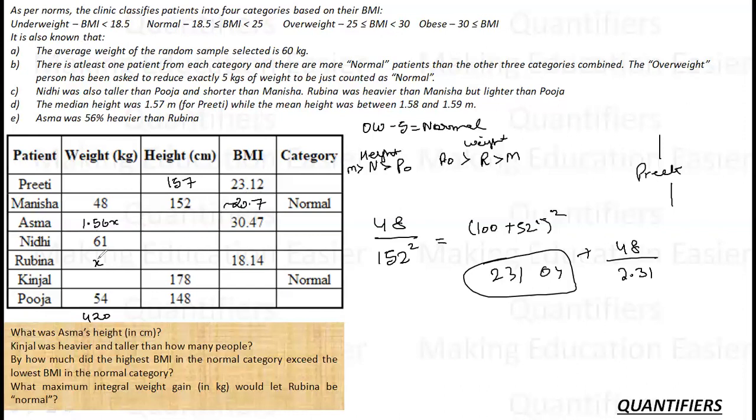For Asma, I cannot calculate. Nidhi, I cannot calculate. Rubina, I cannot calculate. Kinjal, I cannot. Pooja will be 54 upon 148 square, which is again 100 plus 48: 2304, 148, 152, 96 and 21, 196 and 21, 23, 2190. So 54 upon 2.190, which sums up to somewhere around 24.1, 24.5, 24.6.